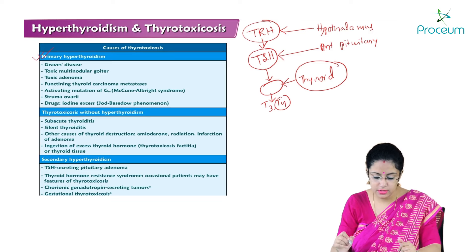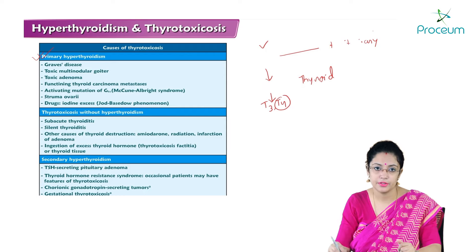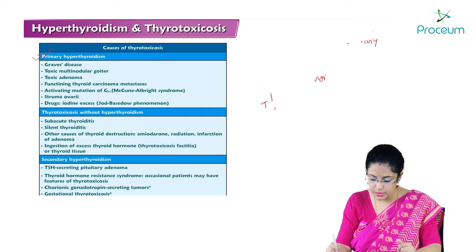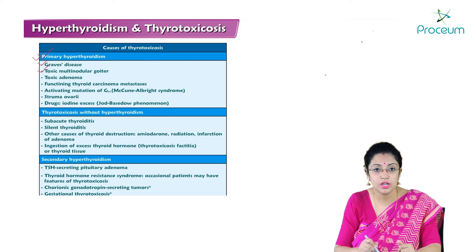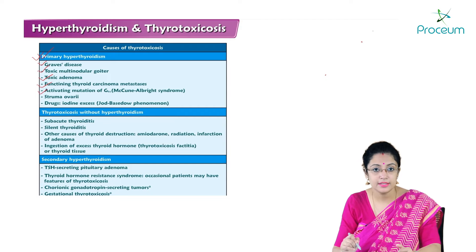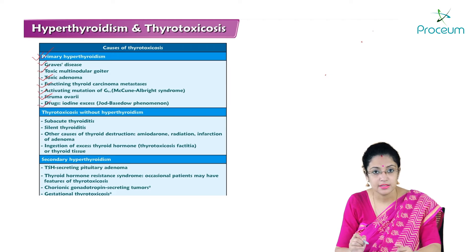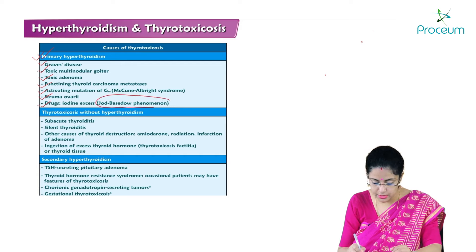The most common cause of primary hyperthyroidism is Graves disease, which is an autoimmune condition leading to hyperthyroidism. Other causes include toxic multinodular goiter, toxic adenoma, functioning thyroid carcinoma metastasis, activating mutation of GS alpha subunit of the receptor, struma ovarii, and drugs like iodine excess. By the Jod-Basedow phenomenon, there will be hyperthyroidism in cases of iodine excess.